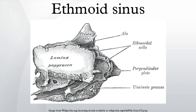The ethmoidal sinuses, or ethmoidal air cells of the ethmoid bone, are one of the four paired paranasal sinuses. They are variable in both size and number — small cavities in the lateral mass of each ethmoid bone — and cannot be palpated during an extraoral examination. They are divided into the anterior, middle, and posterior groups.